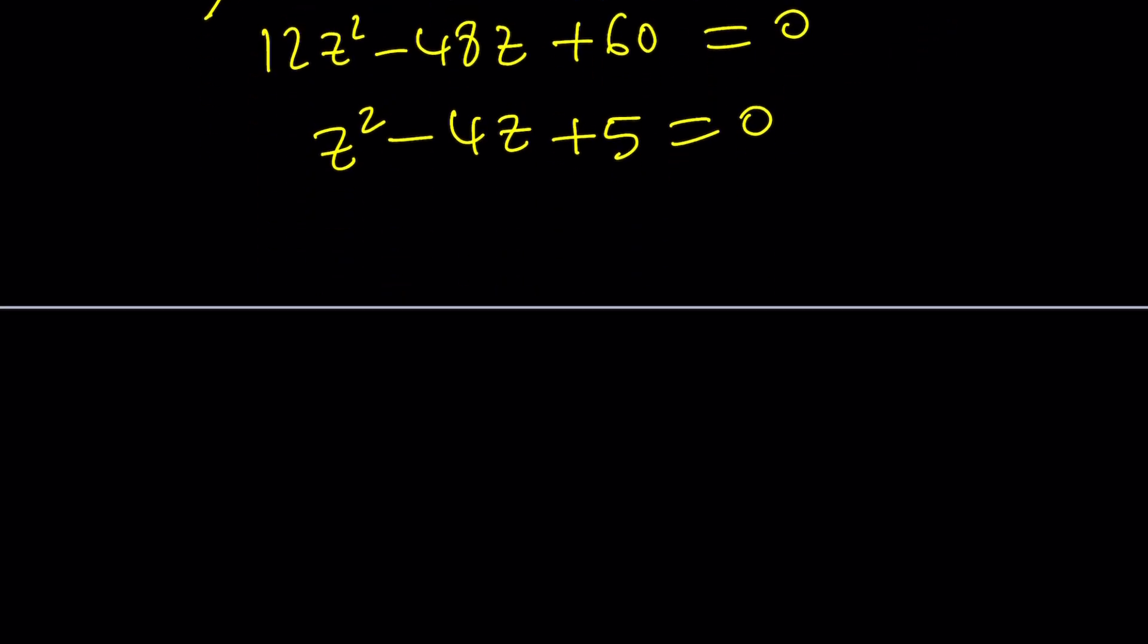And you might be tempted to find like 5 and 1 or 5 and negative 1. Uh-oh. This is not factorable because the solutions are, let's find out by using the quadratic formula, negative B plus minus the square root of B squared, which is 16, minus 4 times 5, which is 20.